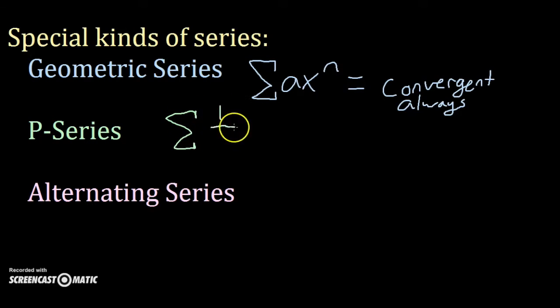A p-series looks something like 1 over x to the n. P-series are convergent when n is greater than 1 and divergent when n is less than or equal to 1.